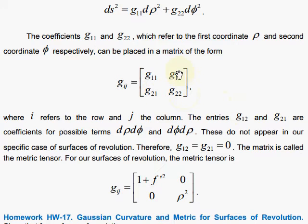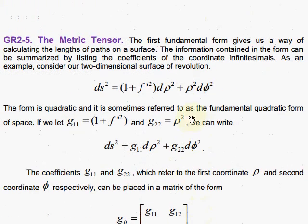Now the off-diagonal terms, sometimes called g1,2 and g2,1, versus the diagonal terms. These allow for the mixing cases, d rho d phi and d phi d rho, and they don't appear in our case here. We do not have a d phi d rho term or d rho d phi term. In general, you could have that.